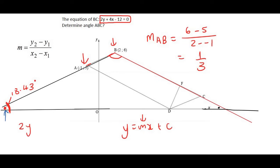So we currently have 2y plus 4x minus 12 equals 0. I'm going to divide everything by 2 so long. Then move the 2x and the 6 over. So we eventually end up with this.